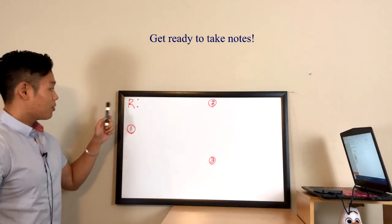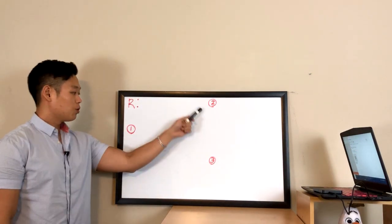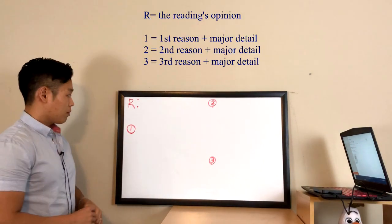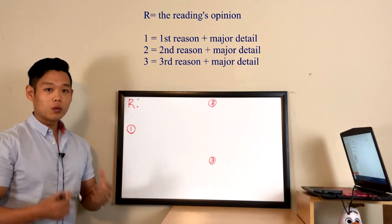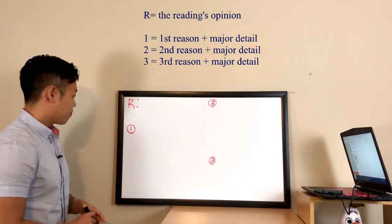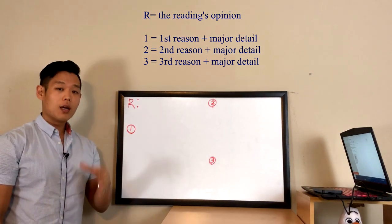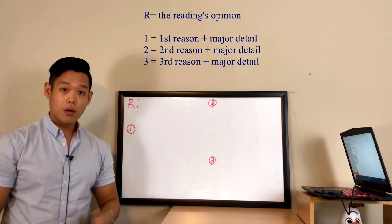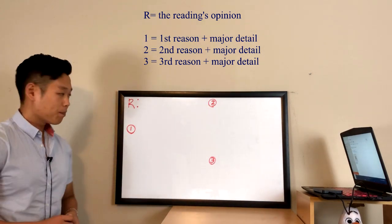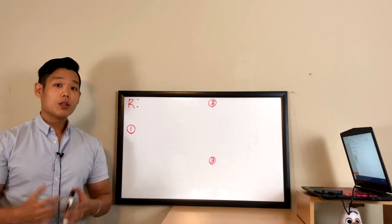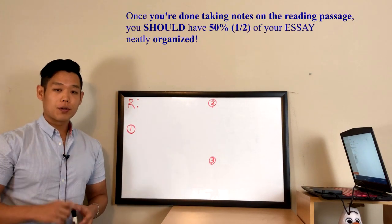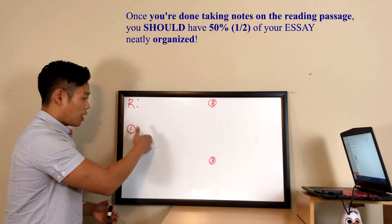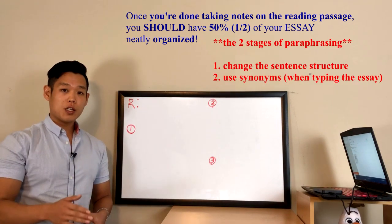Please copy down the note-taking diagram: R, colon, one, two, three. Next to R you're going to write down the reading's opinion, which will most likely be revealed in the last sentence of the introduction paragraph. Next to number one you'll paraphrase the first body paragraph, number two the second, and number three the third. Once you're done taking notes this way, you should have about half of your integrated essay organized.